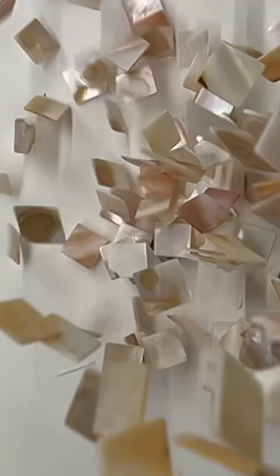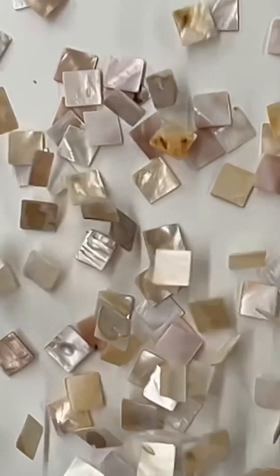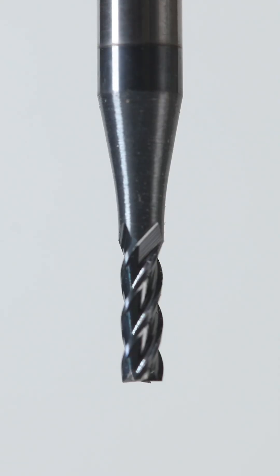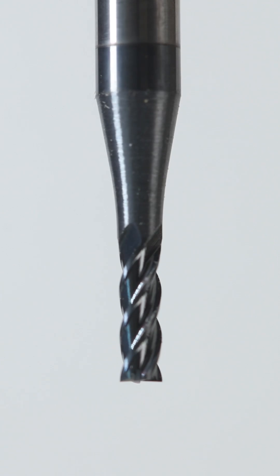Let's make an inlay using some black corian and mother of pearl. We'll be using this tiny sixteenth inch end mill for most of our project.